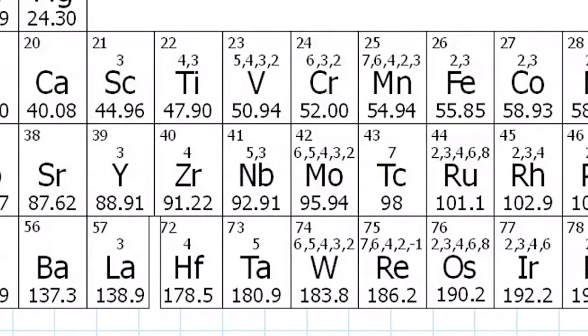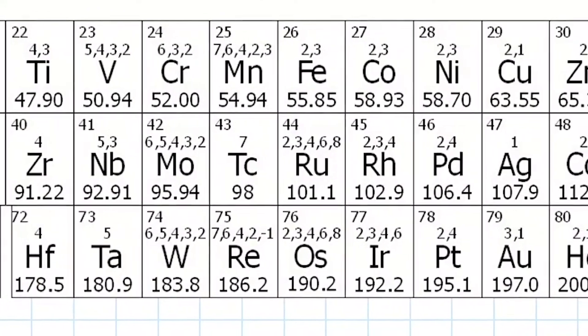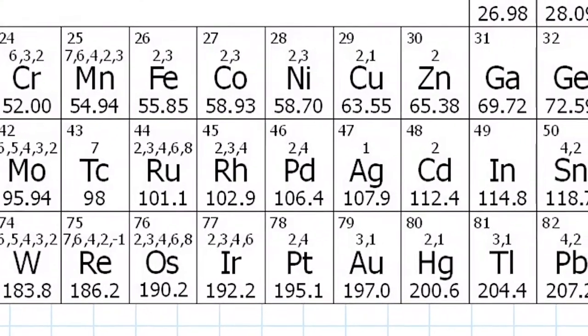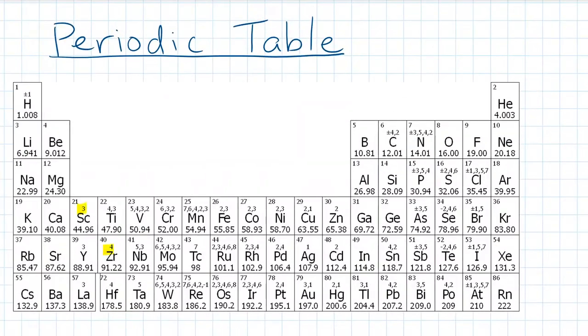First off, if you look really closely at the periodic table, there are some tiny numbers written right above the symbol. Some elements may have just one number above, and others might have multiple tiny numbers written above. If it has one number on top, it's just a regular ionic metal. But if there are multiple numbers, then the metal is classified as a multivalent metal.